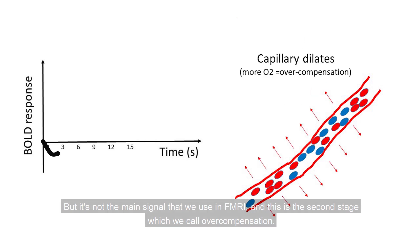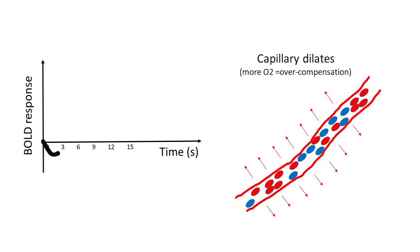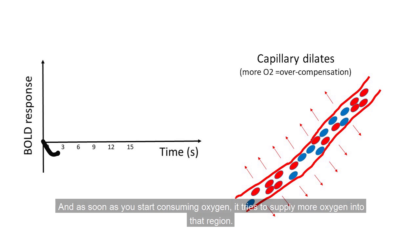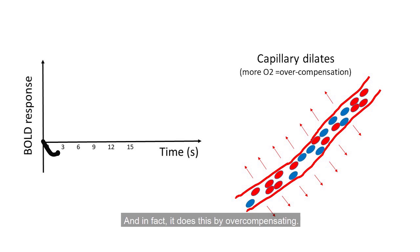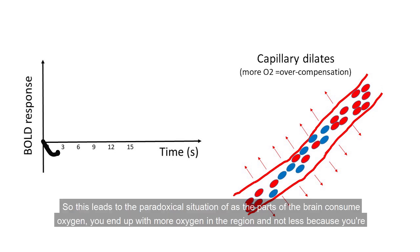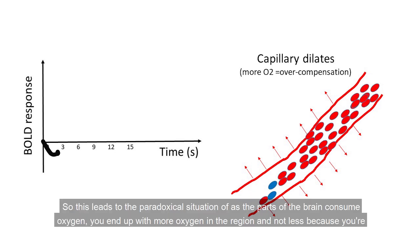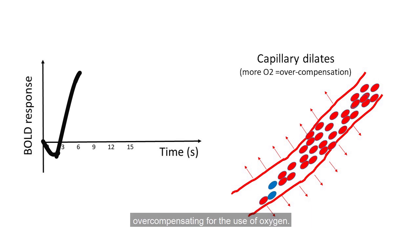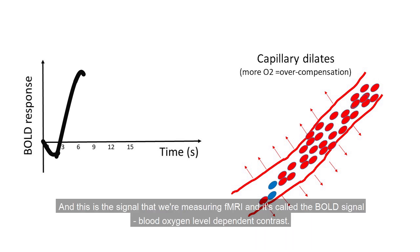The second stage is what we call overcompensation. The blood supply is in a fine balance, and as soon as you start consuming oxygen, it tries to supply more oxygen into that region — and in fact it does this by overcompensating, supplying far more oxygen than is actually needed. This leads to the paradoxical situation where, as the brain consumes oxygen, you end up with more oxygen in the region and not less. This is the signal we're measuring in fMRI, and it's called the BOLD signal — blood oxygen level dependent contrast.